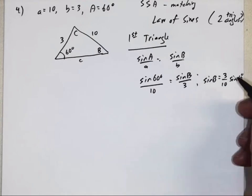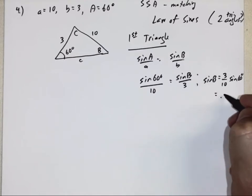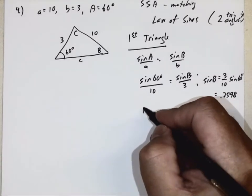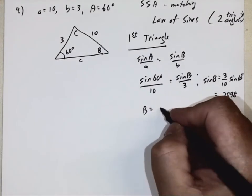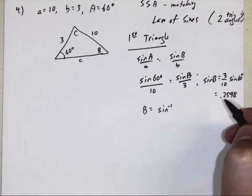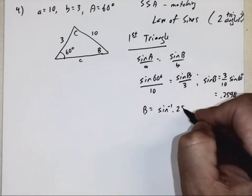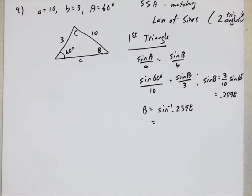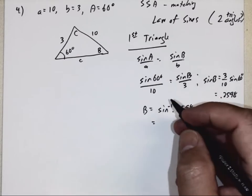Once again, be careful not to round off too soon. I'm going to call this 0.2598. Now, to get angle B, what do I do? I take the inverse sine of both sides of the equation, and in this case it says round to 2 decimal places, so 15.06 degrees.